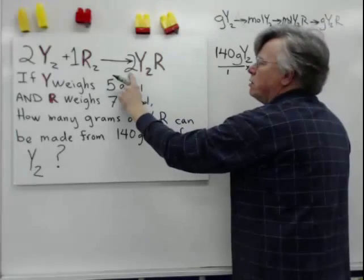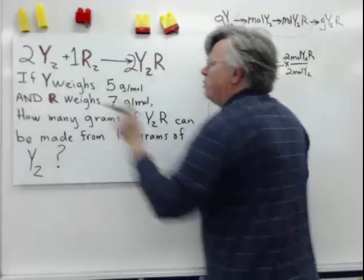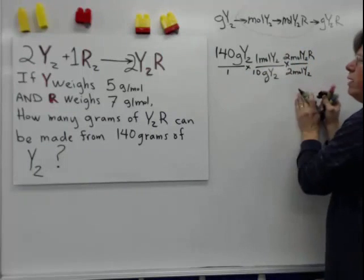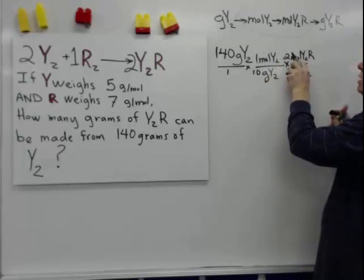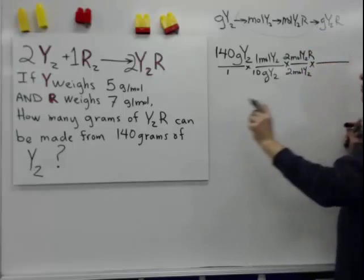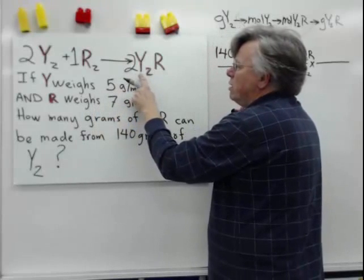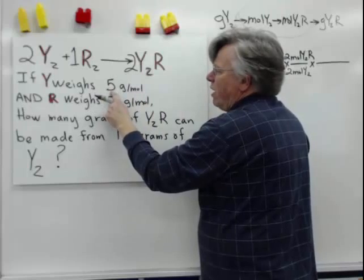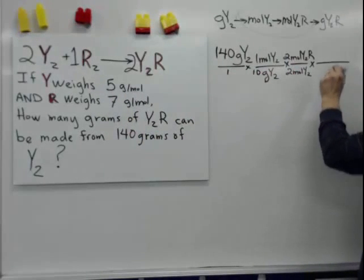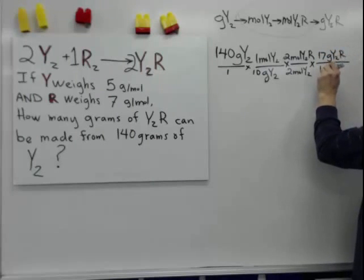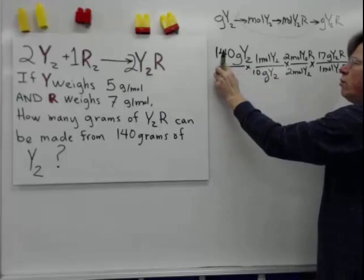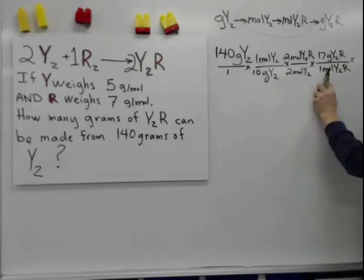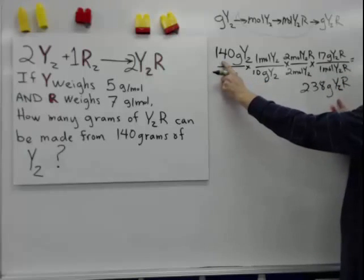Those numbers came from the balanced chemical equation. Doing the math: 140 divided by 10 is 14, times 2 divided by 2 gives us 14 moles of Y₂R. Now we convert to grams: Y₂R has two Y's and one R, so that's 5 + 5 + 7 = 17 grams per mole of Y₂R. So the final answer is 140 ÷ 10 × (2/2) × 17 = 238 grams of Y₂R.